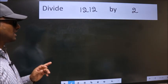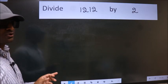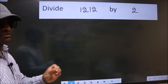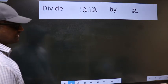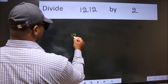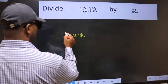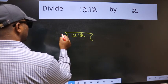Divide 1212 by 2. To do this division, we should frame it in this way: 1212 here, 2 here.